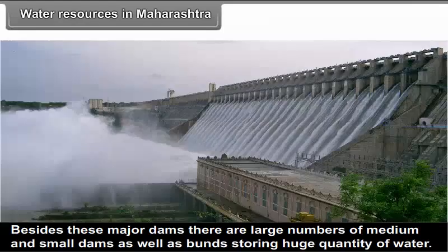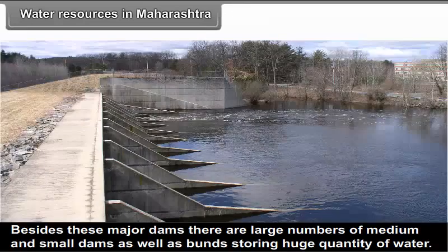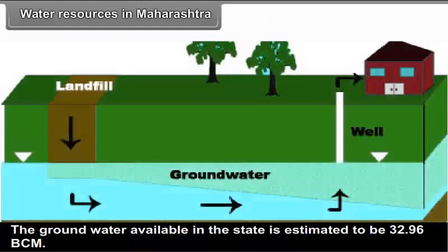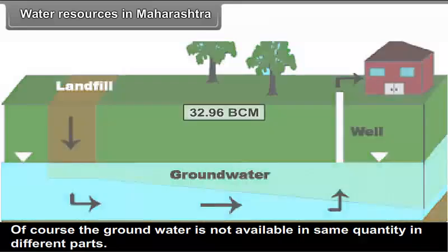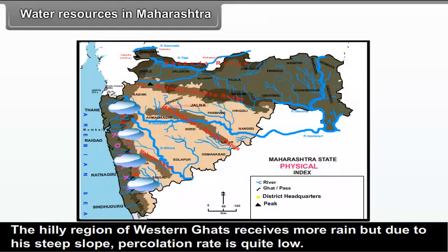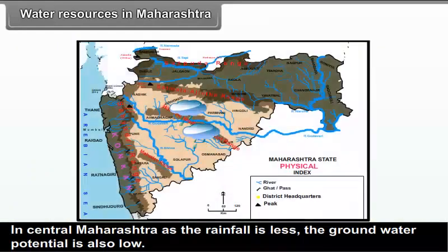Besides these major dams, there are large numbers of medium and small dams as well as bunds storing huge quantities of water. The ground water available in the state is estimated to be 32.96 BCM. However, ground water is not available in the same quantity in different parts. The hilly region of the Western Ghats receives more rain but due to the steep slope, percolation rate is quite low. In central Maharashtra, as the rainfall is less, the ground water potential is also low. Comparatively, in the low-lying areas within the river basins, ground water is more.